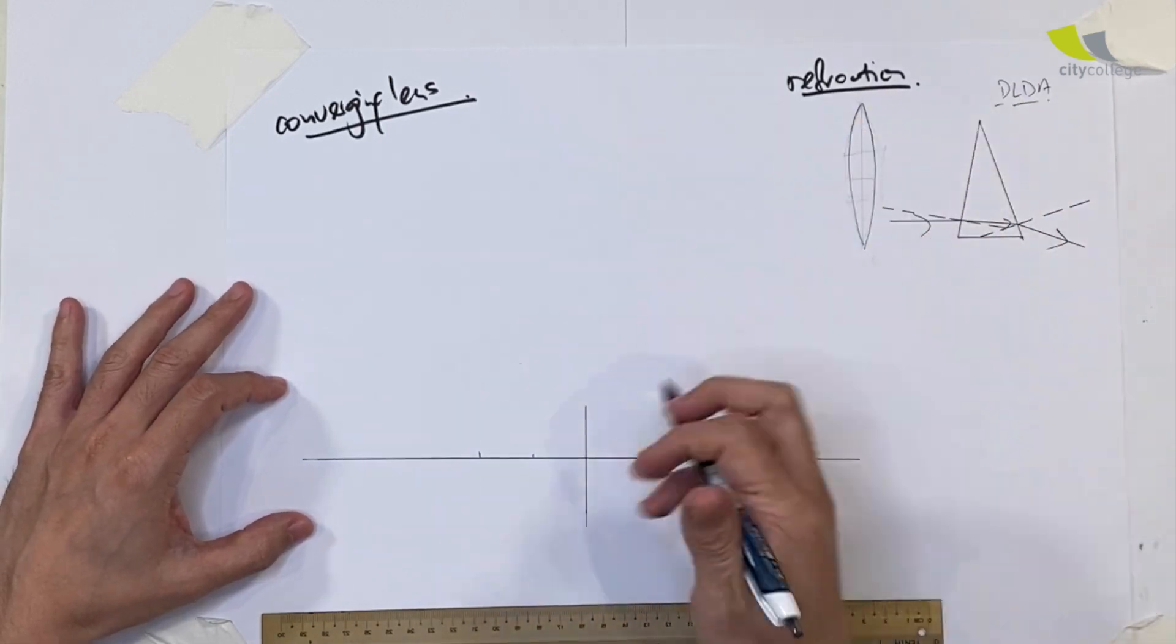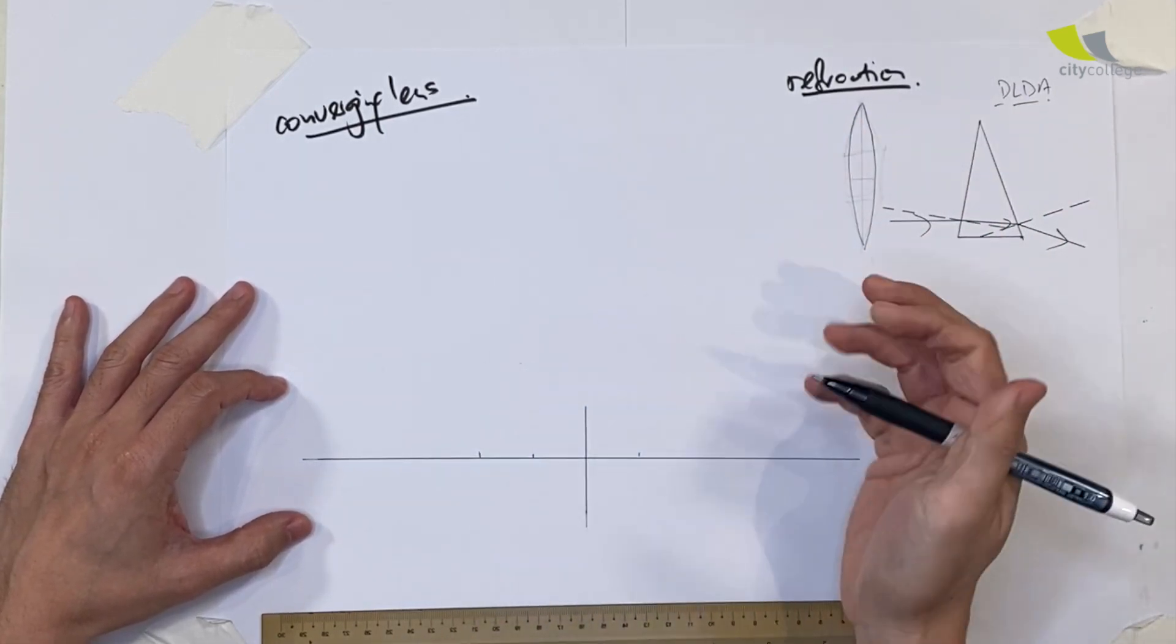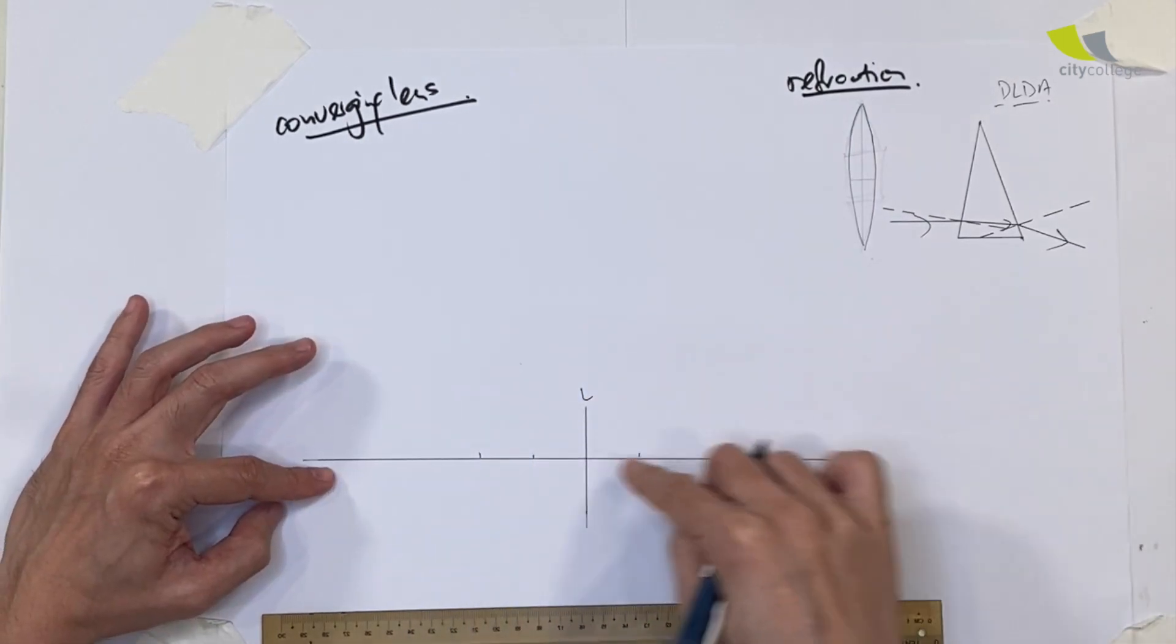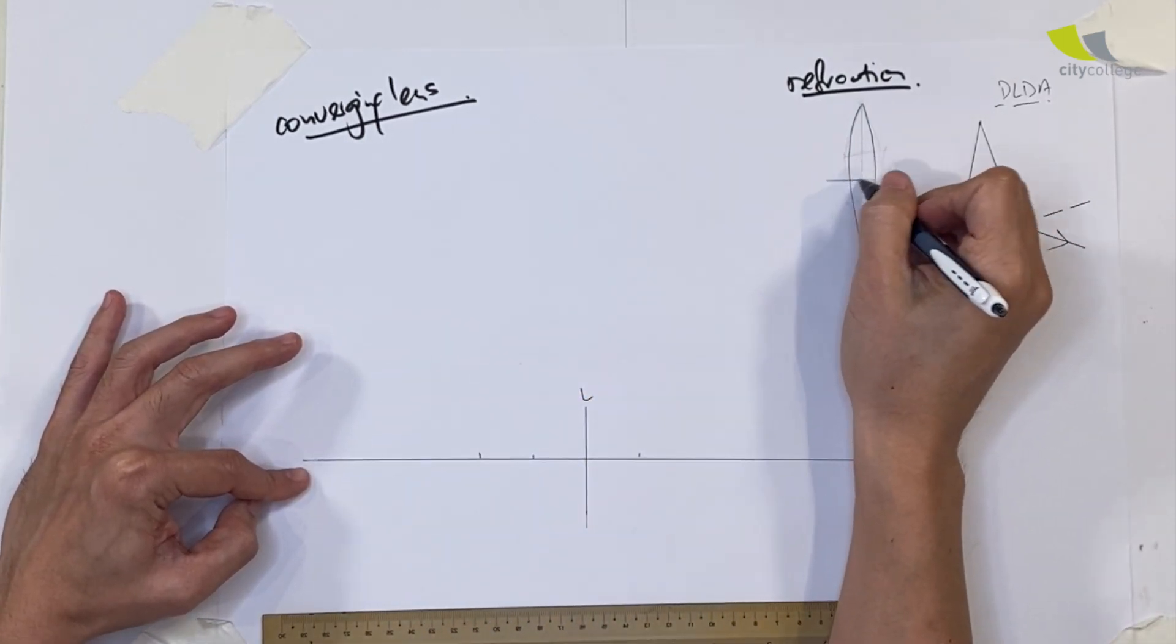In a converging lens ray diagram, we simplify - we just draw one line here, and this line represents the center of the lens, which we mark as L. This is the principal axis, cut at the middle of the lens. This center point is called the optical center.